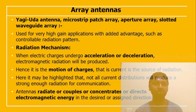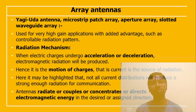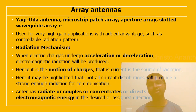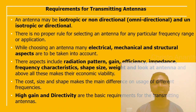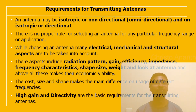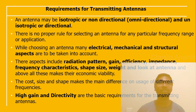The radiation mechanism works as follows: when electrical charges accelerate or decelerate, electromagnetic radiation is produced. It is the movement of charges — that is, current — that causes radiation. Not all current distributions produce strong enough radiation for communication, so antennas radiate, couple, concentrate, or direct electromagnetic energy in the desired direction. Antennas can be isotropic (non-directional) or anisotropic (directional). There is no fixed rule for selecting an antenna for a particular frequency range or application; electrical, mechanical, and structural characteristics must all be considered.